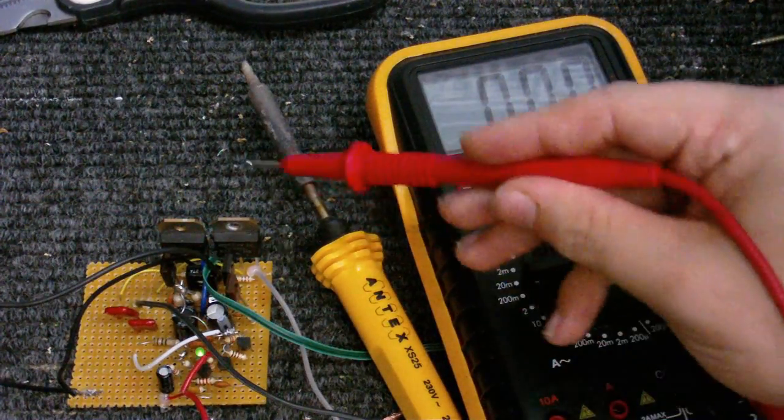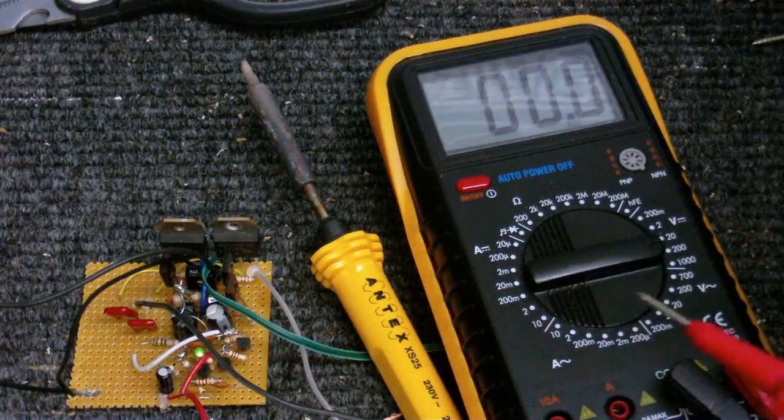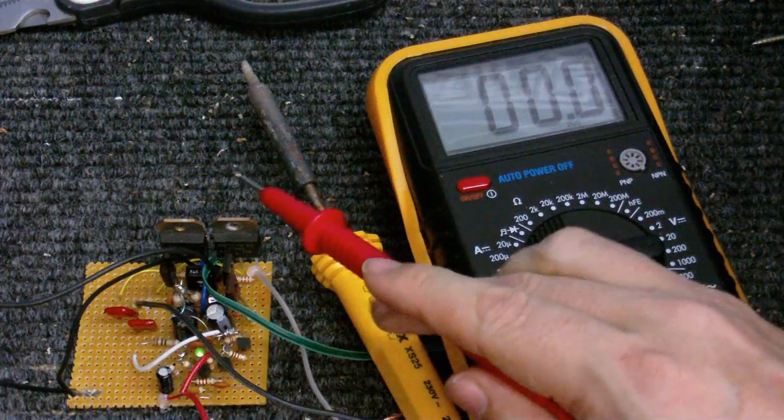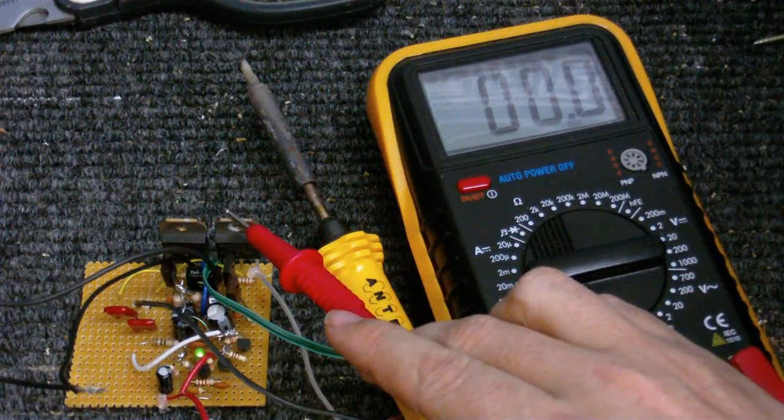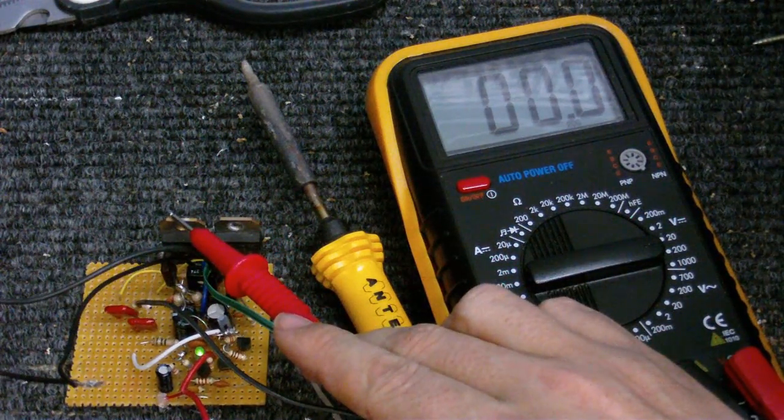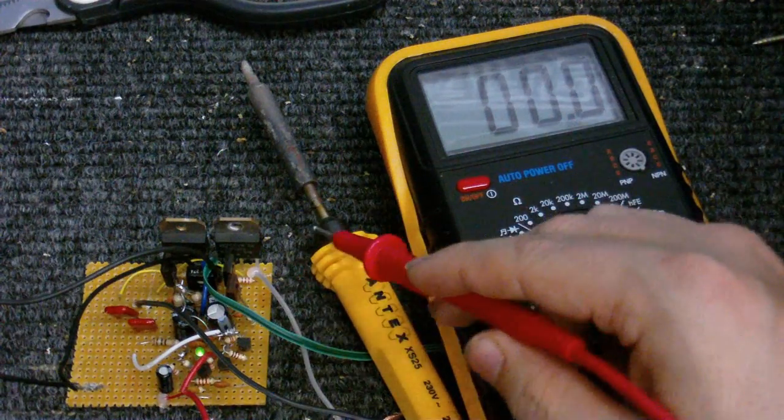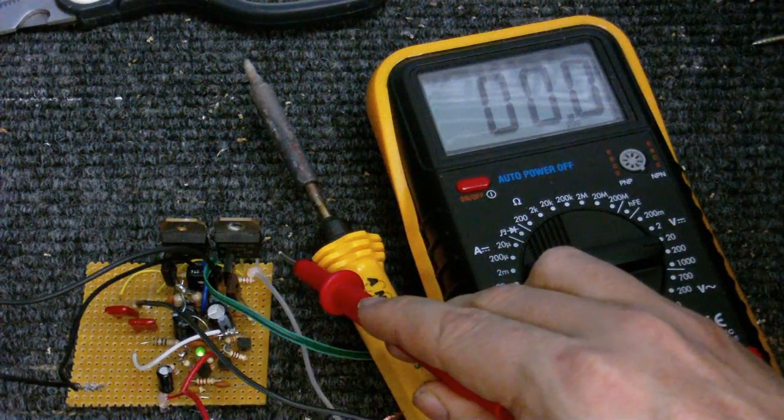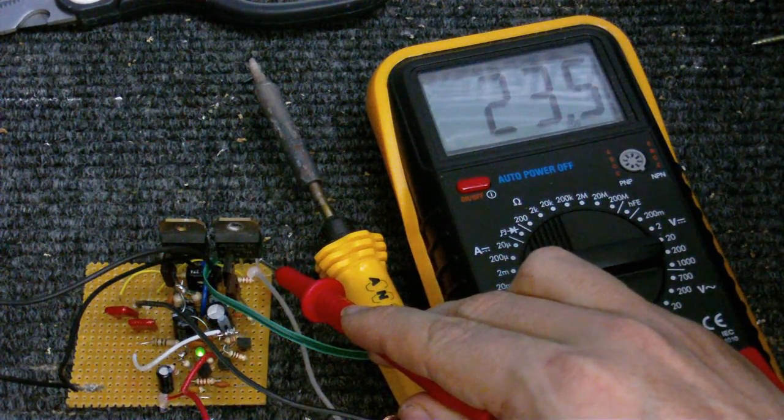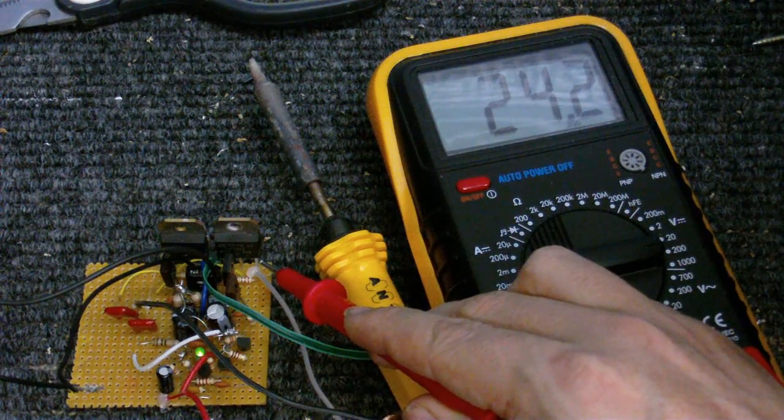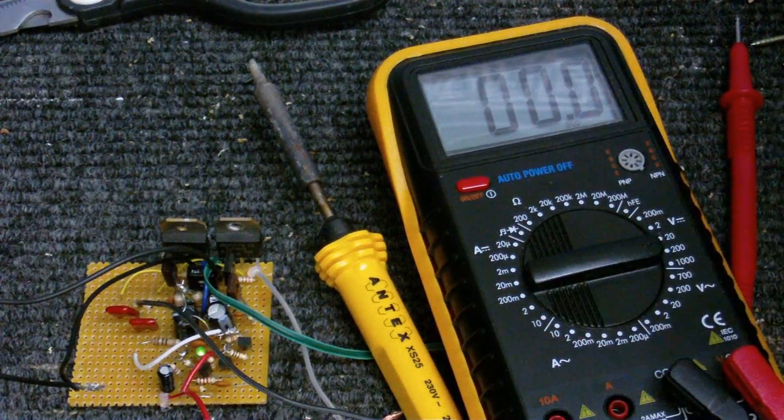I'm first going to test the collectors of the two big transistors. I might just simply touch the metal case of these. This one we have nothing, and at this one we have nothing. Let's check the supply voltage getting in, which is connected to this pin of this transistor. OK, we've got 24.2 volts there, so I'm going to write all those down.